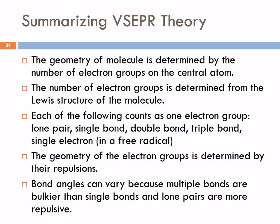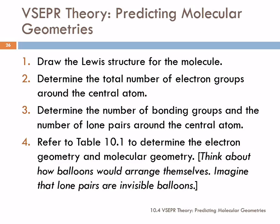So summarizing VSEPR theory. Geometry is determined by the number of electron groups. The number of electron groups we get from the Lewis structure. These are the ones that count as electron groups - each of them counts as one: lone pair, single bond, double bond, triple bond, single electron. The geometry of those electron groups is determined by their repulsions. Bond angles can vary. Multiple bonds are bulkier than single bonds. Lone pairs are more repulsive than any of them.